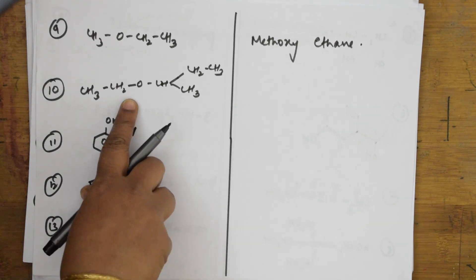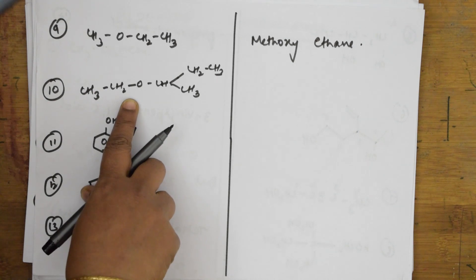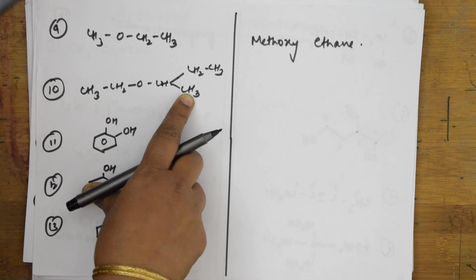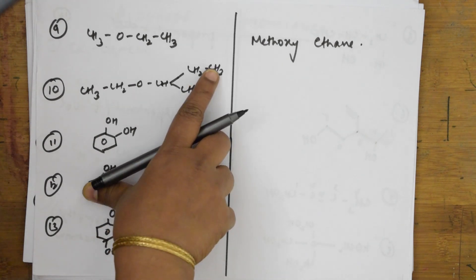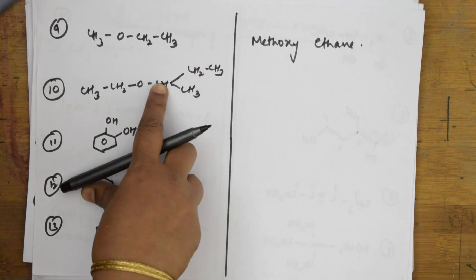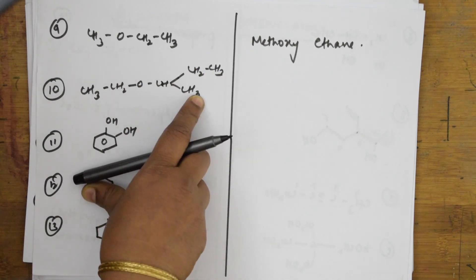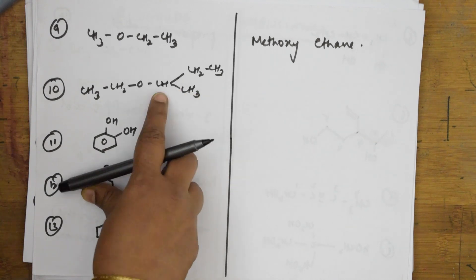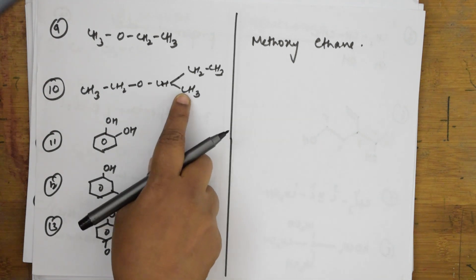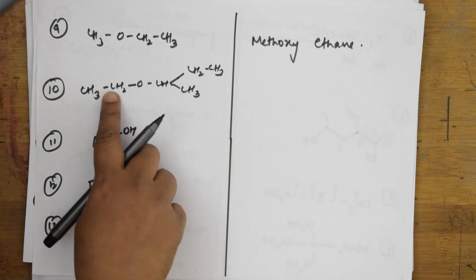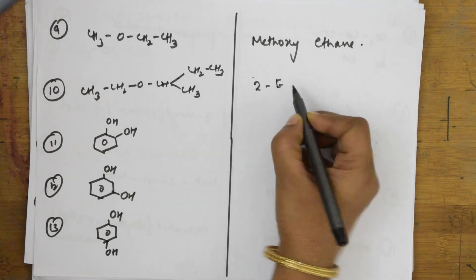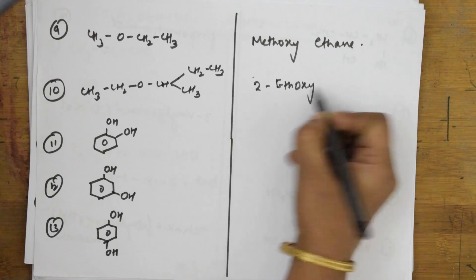For this ether example, first identify the parent chain: one, two, three, four carbons. The ethoxy group is present, so counting carefully from the correct end — one, two, three, four — with the ethoxy group at position two, we name it 2-ethoxybutane.